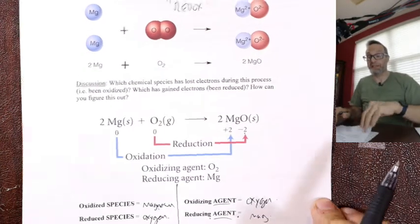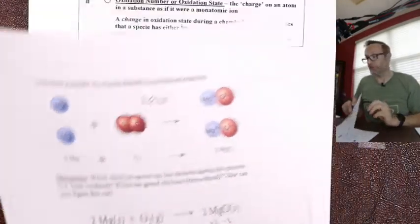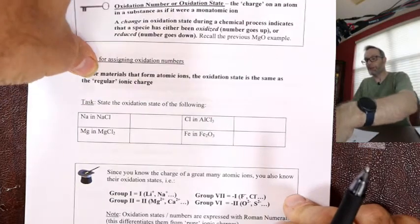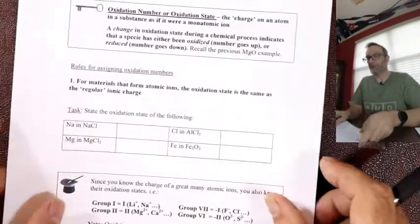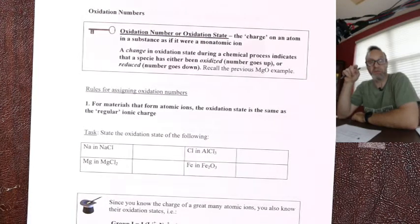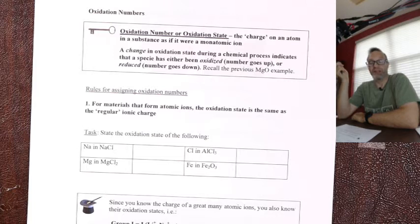People that get that confused often get the questions wrong. For easy oxidation states, this is why you write column one with Roman numeral one, column two with Roman numeral two. The oxidation state an atom makes as an ion is often the same as its charge.